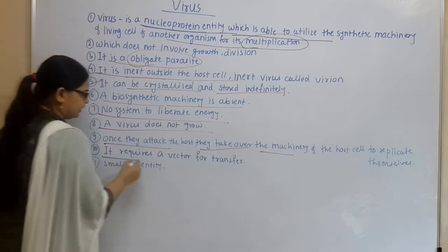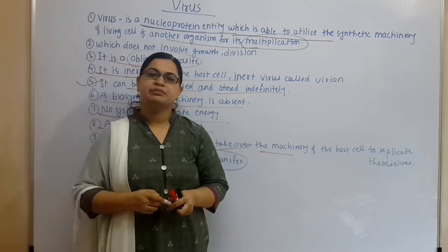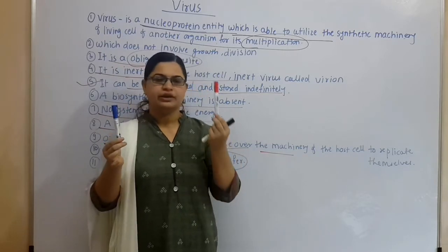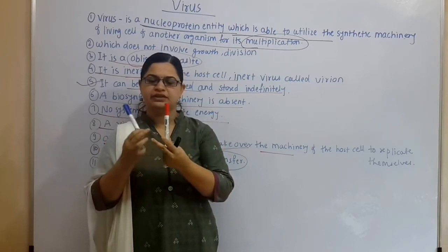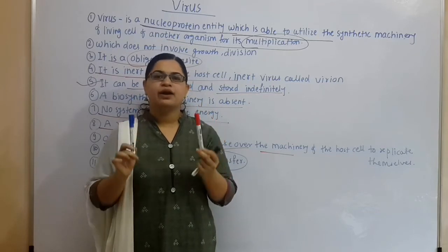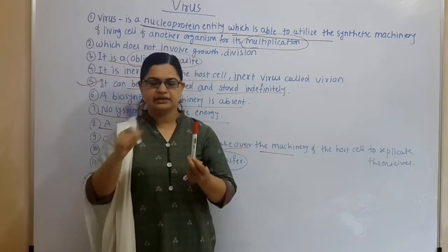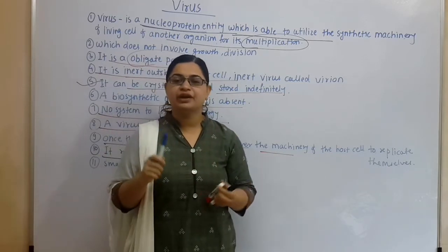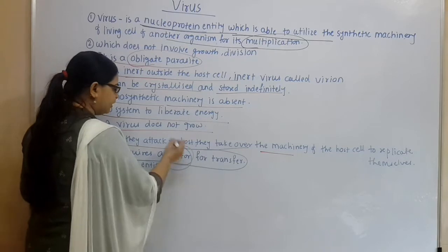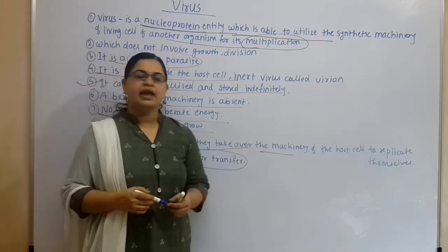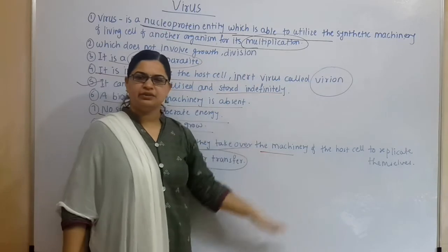A virus requires a vector for transfer — it needs a medium to carry it towards a healthy individual. An infected individual cannot transfer the virus directly; it always requires a carrier vector. This is the smallest entity. When the virus is in its inert state outside a host, we call it a virion. These are the possible characteristics of the virus.